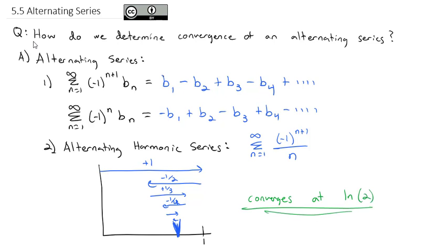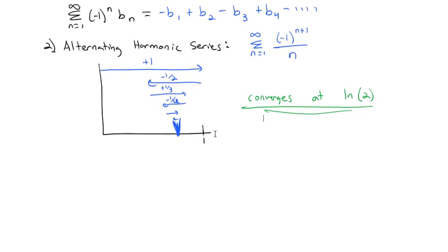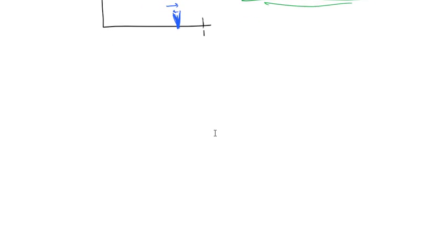We can look at that more closely in class. But for now, what I want to point out is that if we change a divergent series like the harmonic into an alternating series, sometimes it could turn out to be a series that actually converges. But this is not always the case, so we need some better rules to test the convergence of an alternating series.